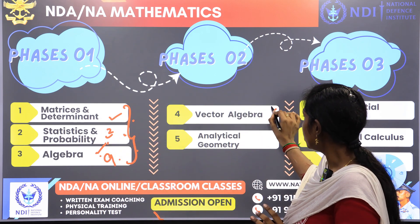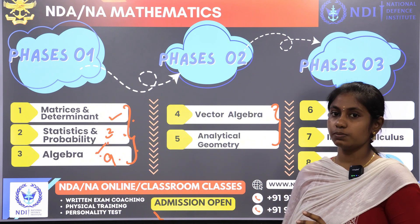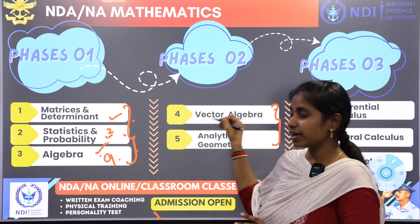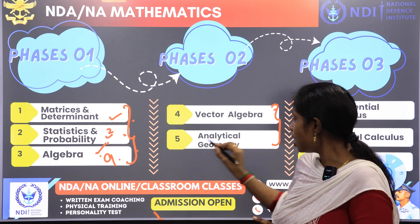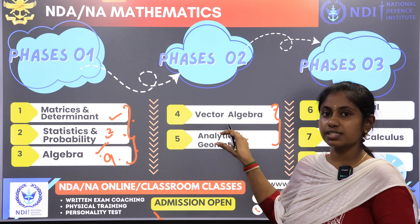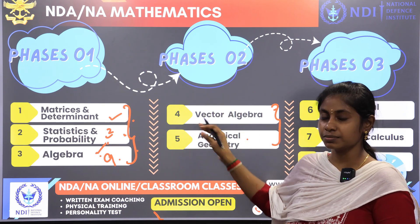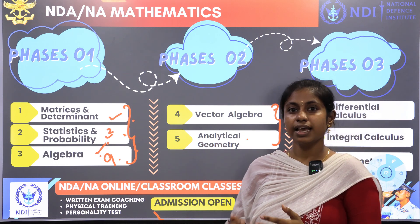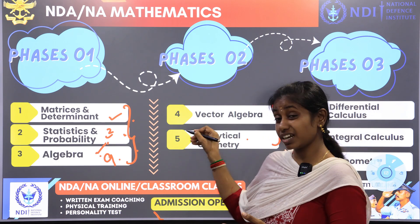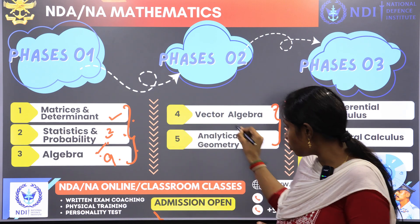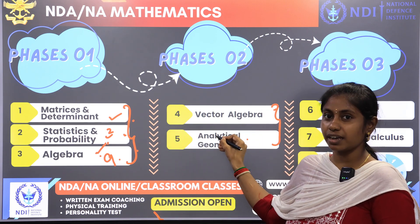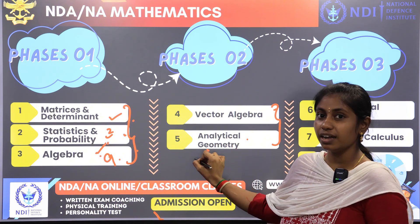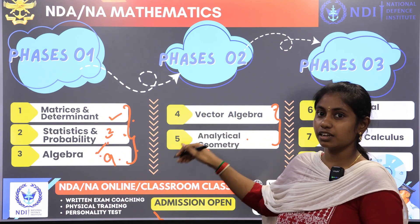Phase two is vector algebra and analytical geometry. The reason they are together in phase two is that in analytical geometry there are chapters like direction ratios and direction cosines, and if you study vector algebra, you can apply the same concepts in analytical geometry. So you can choose both vector algebra and analytical geometry together.